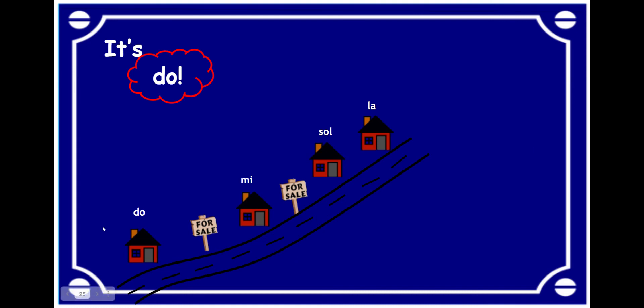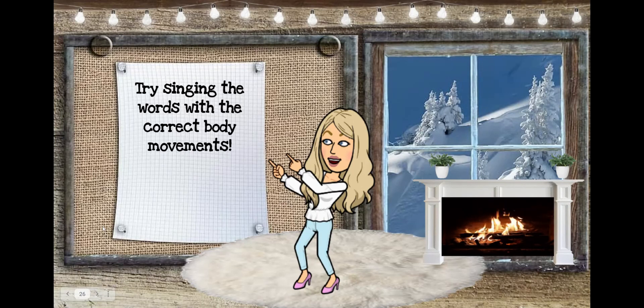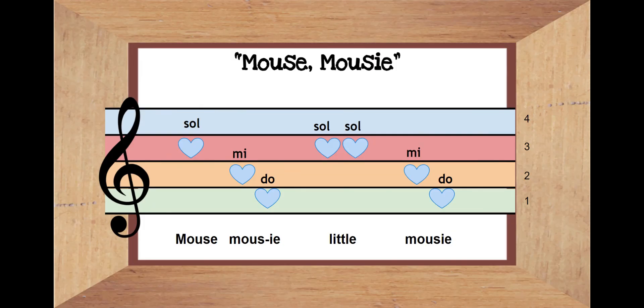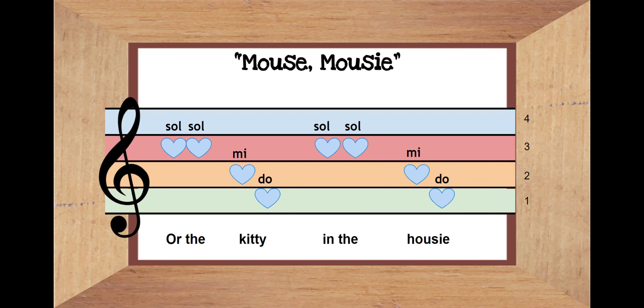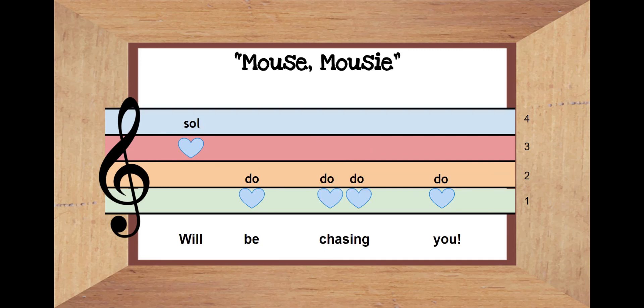So, we are going to sing it again. But this time, we're going to use it with so, me, and doe. Starting on so: so, me, doe. So, so, me, doe. So, doe. Doe, doe, doe. So, so, me, doe. So, so, me, doe. So, doe. Doe, doe, doe.